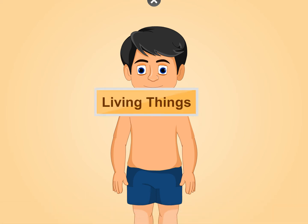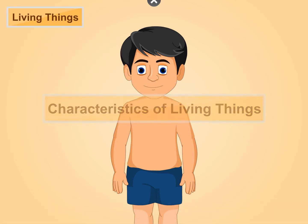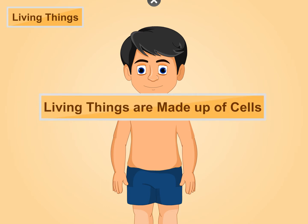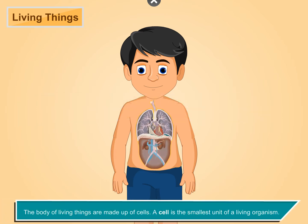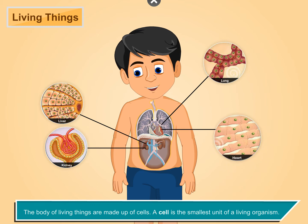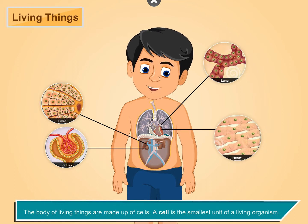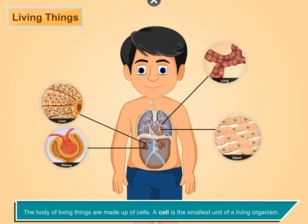Living things — characteristics of living things. Living things are made up of cells. The body of living things is made up of cells. A cell is the smallest unit of a living organism.